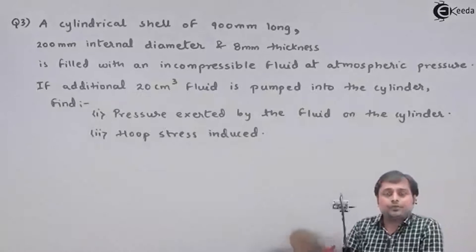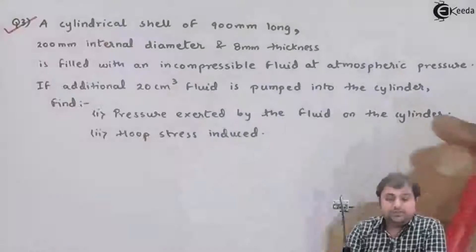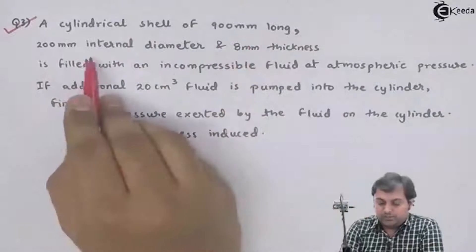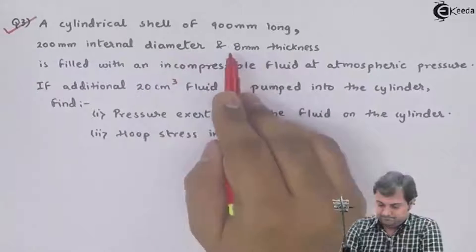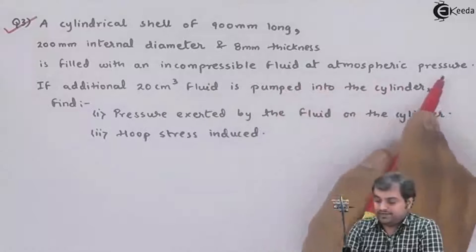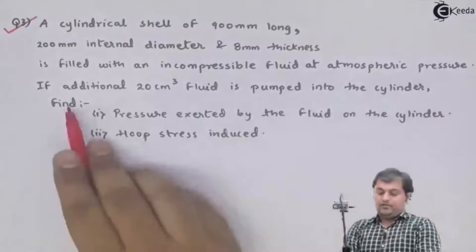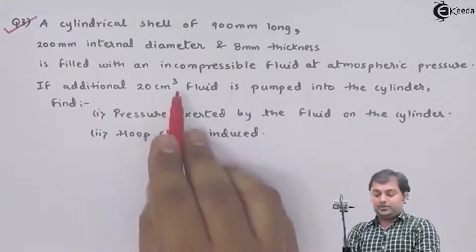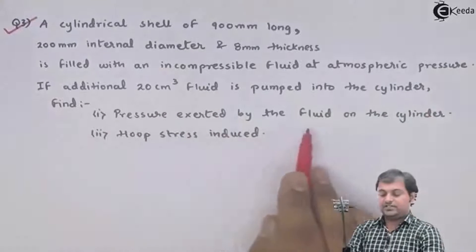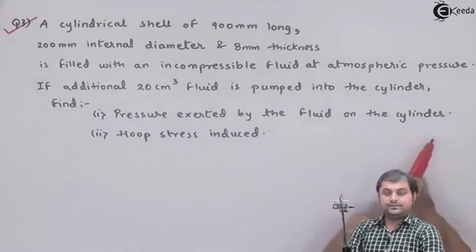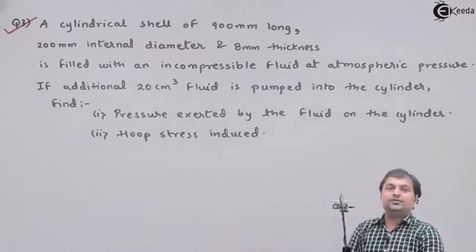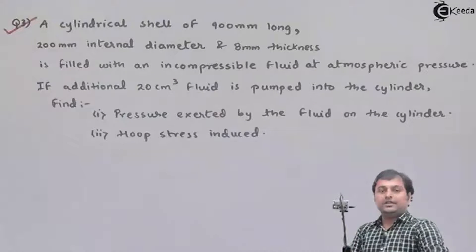Let us take the third question on thin cylinders. A cylindrical shell of 900 mm long, 200 mm internal diameter, and 8 mm thickness is filled with an incompressible fluid at atmospheric pressure. If additional 20 centimeter cube fluid is pumped into the cylinder, find the pressure exerted by the fluid on the cylinder — that is the first question — and hoop stress induced, that is the second question.